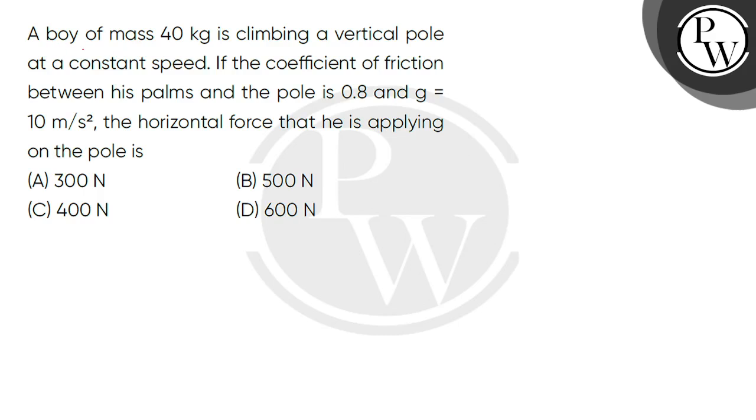So let's read the question. A boy of mass 40 kg is climbing a vertical pole at a constant speed. If the coefficient of friction between his palms and the pole is 0.8 and acceleration due to gravity is 10 meter per second square, the horizontal force that he is applying on the pole is.